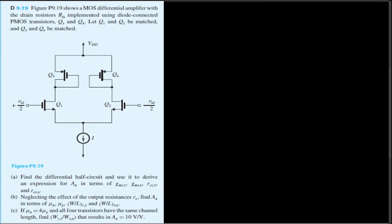The problem references figure P9.19, which shows a MOS differential amplifier with a tail resistor RD implemented using diode-connected PMOS transistors Q3 and Q4. Q1 and Q2 are matched, and Q3 and Q4 are matched. Part A asks us to find the differential half circuit and use it to derive an expression for AD in terms of gm12, gm34, ro12, and ro34.